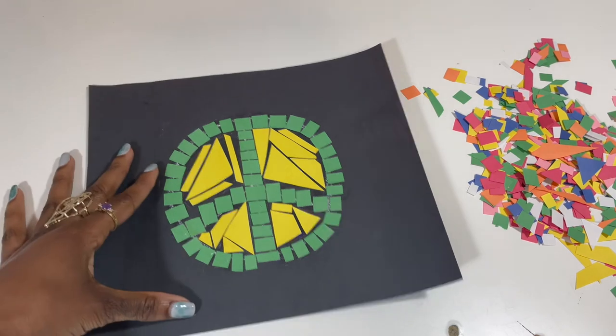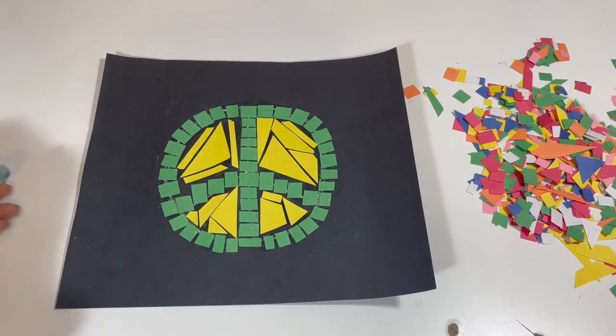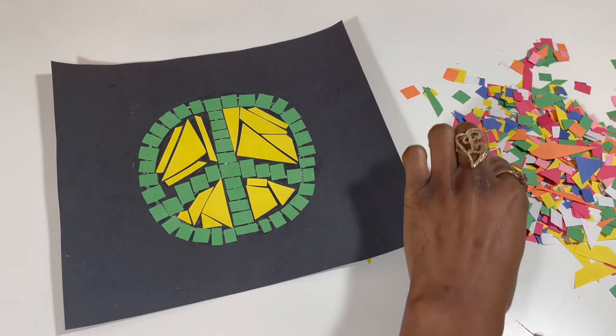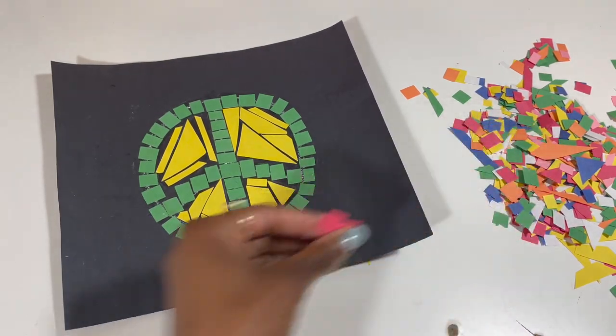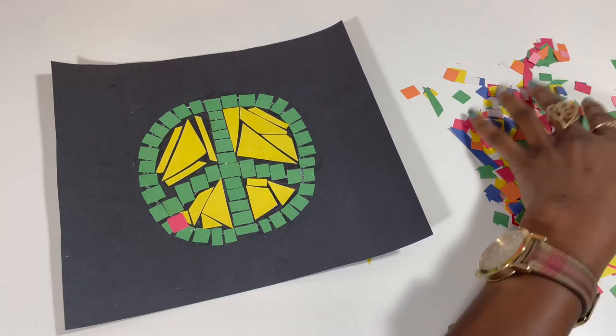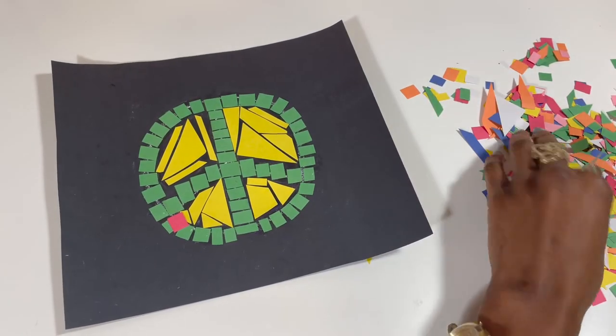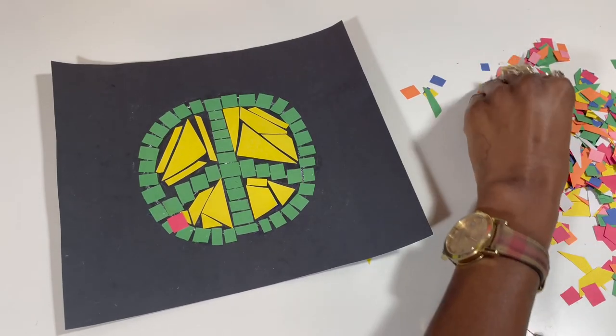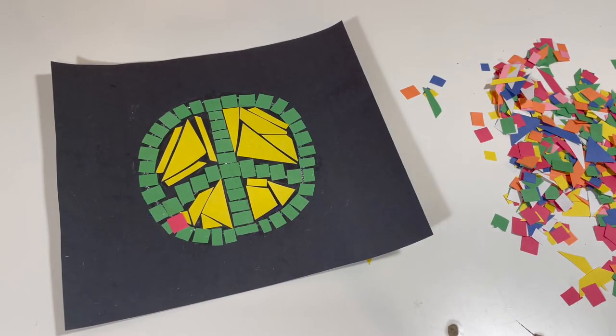All right, I'm back from filling in the last two sections of my peace mosaic. I am going to then take some of the red pieces and I'm going to add them to the outside. I'm going to incorporate any pieces or shapes that I have.